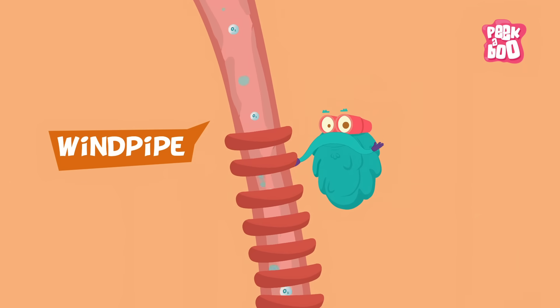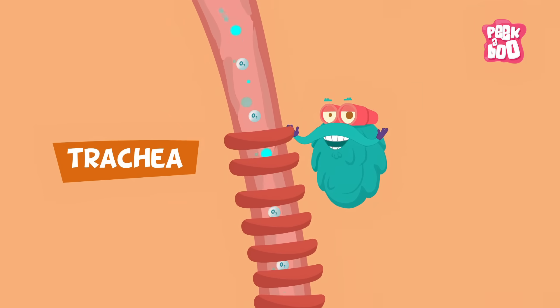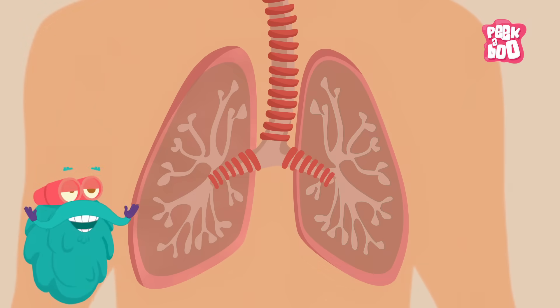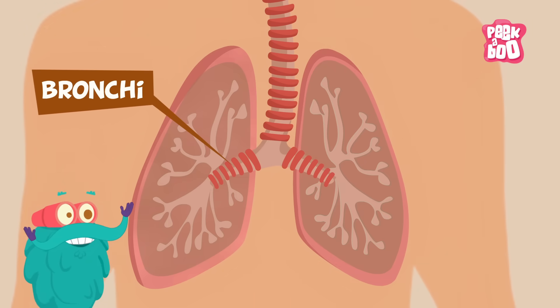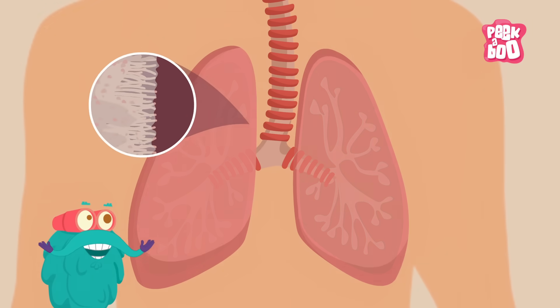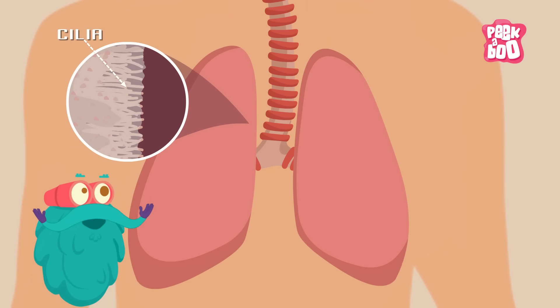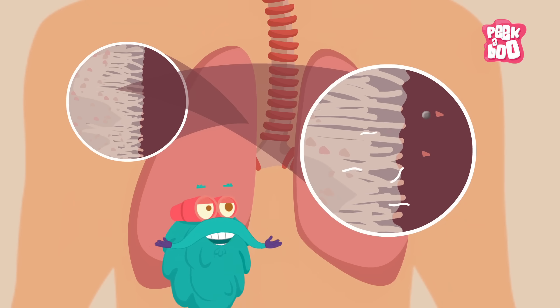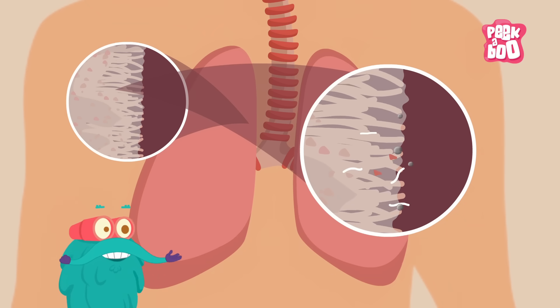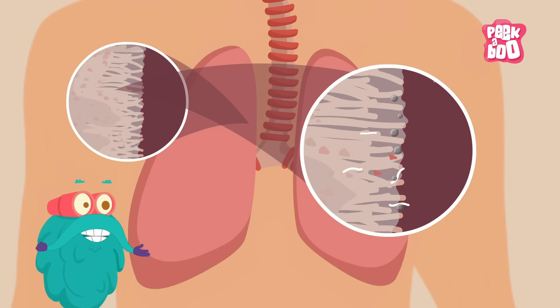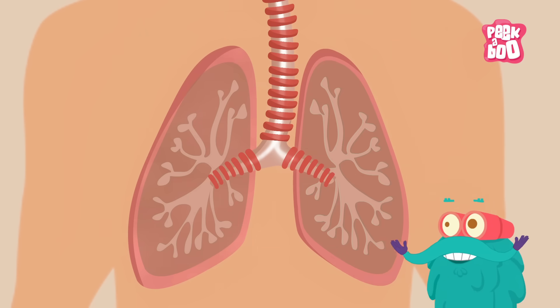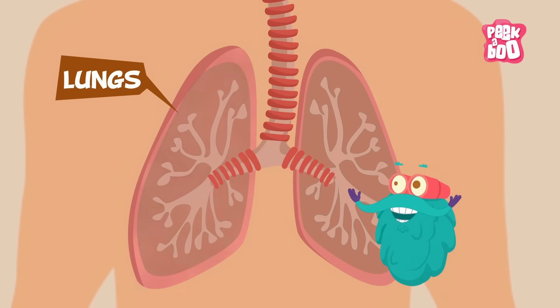Also called the trachea, which filters the air inhaled. The trachea branches out to two tubes called bronchi, where tiny hairs called cilia move back and forth moving the mucus inside. The mucus is a sticky substance that collects germs and other particles that might harm the lungs.